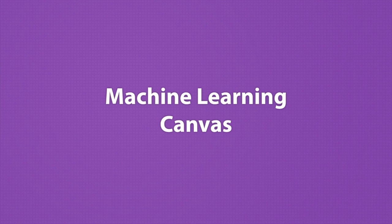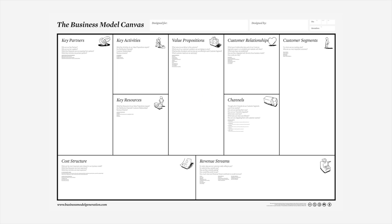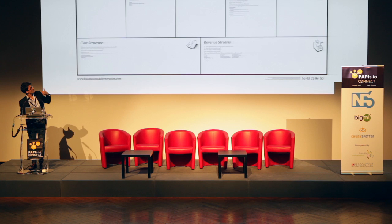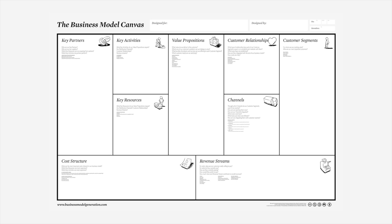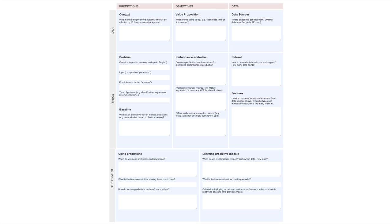A quick word about the machine learning canvas. Here's the business model canvas, which I got inspiration from. It's not a replacement of the business model canvas, but there are things in common, like the value proposition block. It's a document to lay out key things — in my case, the key aspects of your predictive system that uses machine learning.